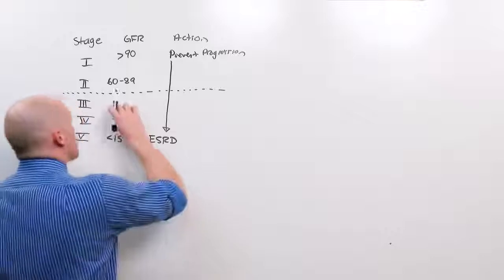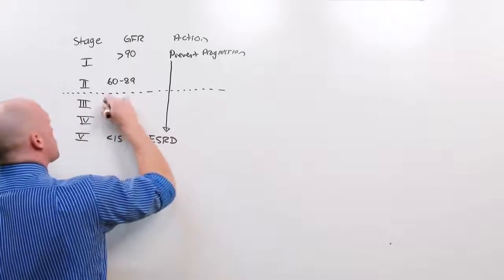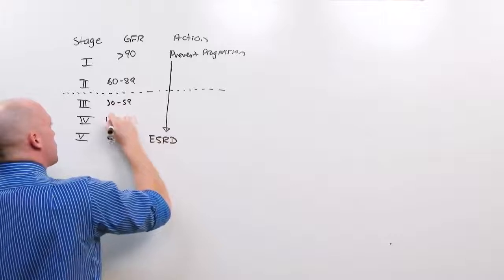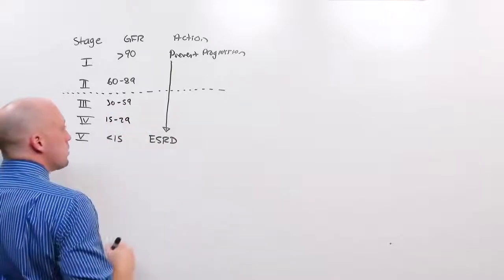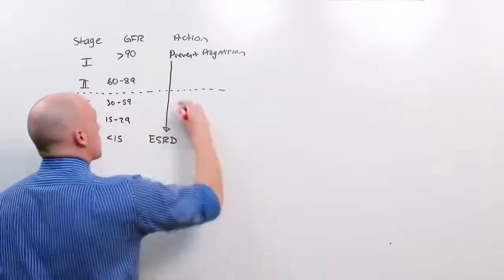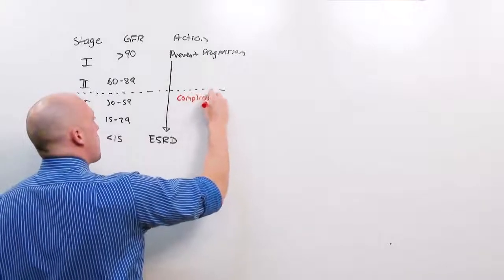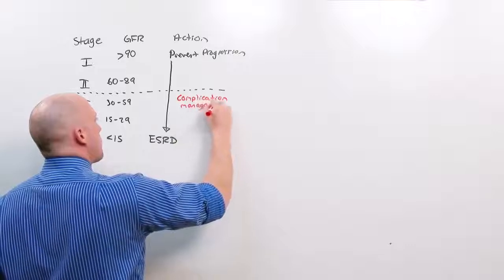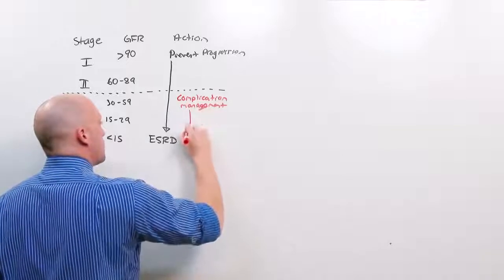Stage 3 and 4 is really where you start to see these. Stage 3 being 30 to 59. And stage 4, 15 to 29. This is where you begin to see complications and their management.